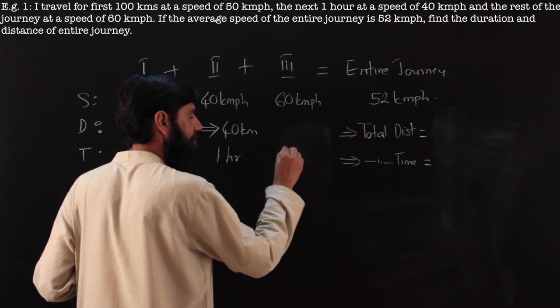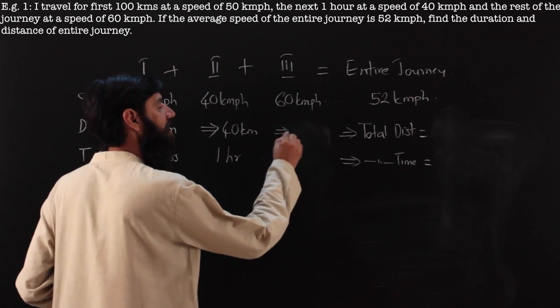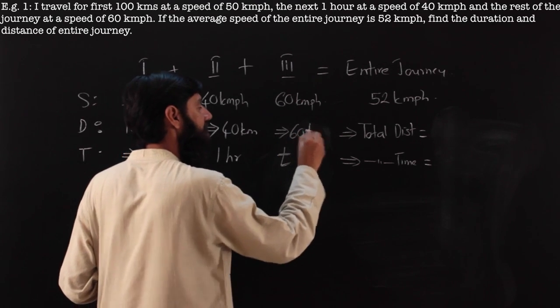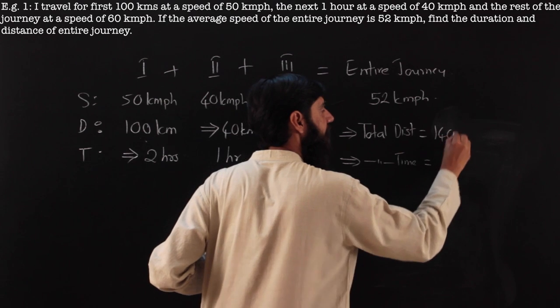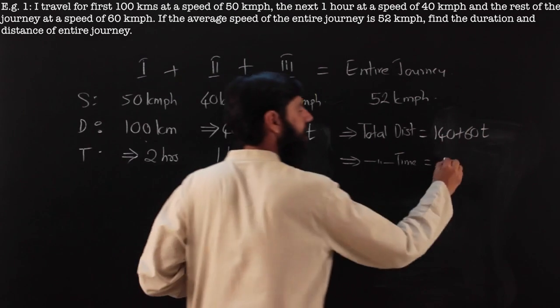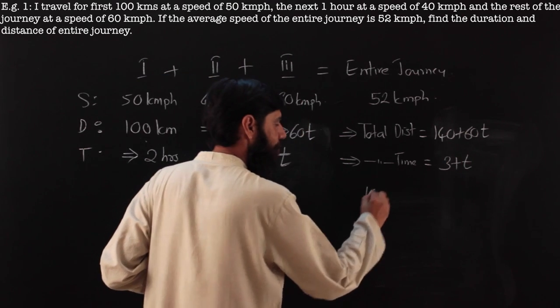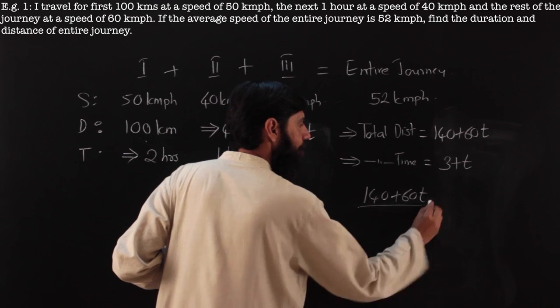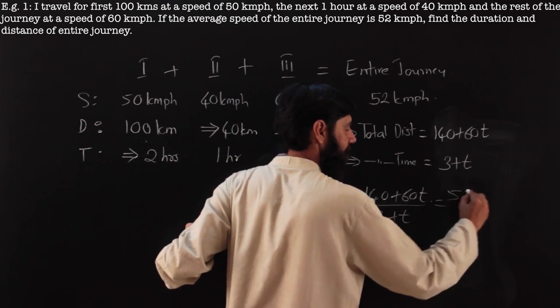Let me assume the time. Since I am taking time, I typically use t, and if I take t, then the distance can be deduced as speed into time, 60t. The total distance is 140 plus 60t, whereas the total time is 3 plus t.